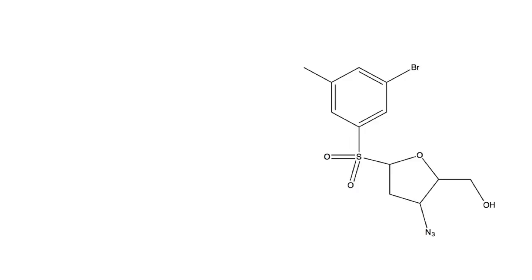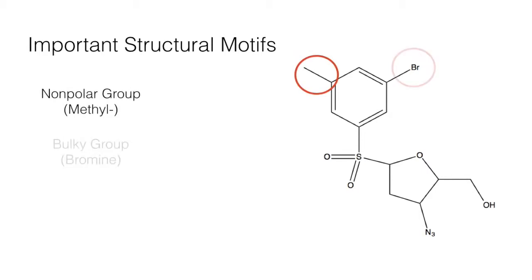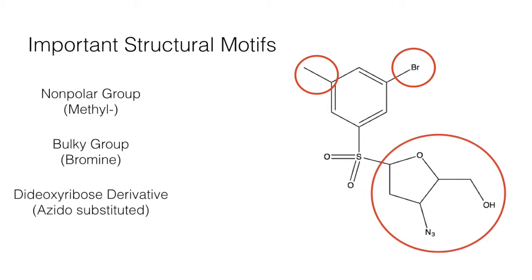They also identified three groups that strongly drove the inhibitory mechanism: a nonpolar methyl group, a bulky bromine group, and the azido-substituted dideoxypentose group. This may be highly useful in designing new drugs, as chemically similar groups may offer equally potent alternatives.